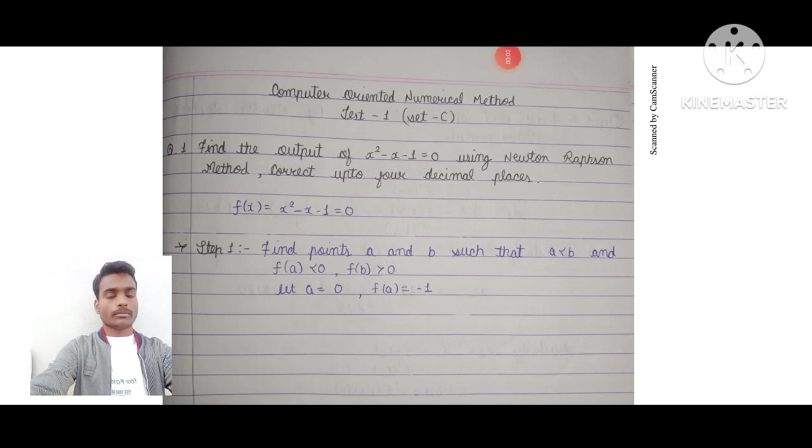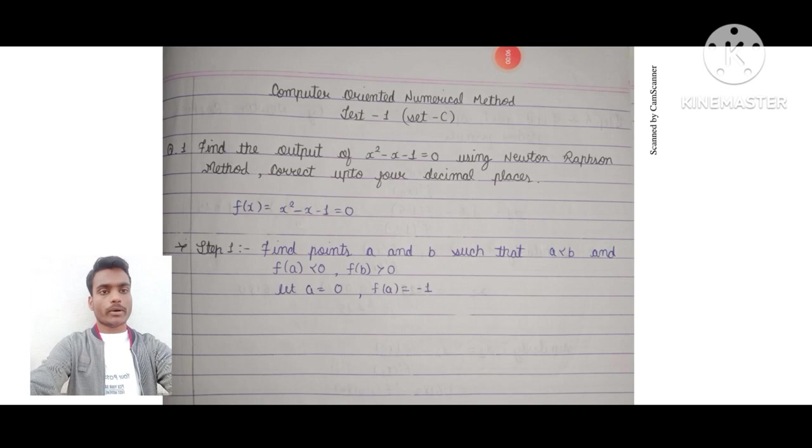Question number one from Test 1, Set C of Computer Oriented Numerical Method: Find the output of x² - x - 1 = 0 using Newton-Raphson method, correct up to four decimal places.